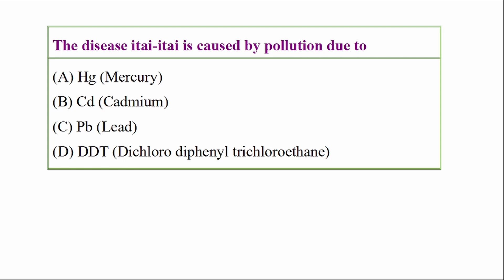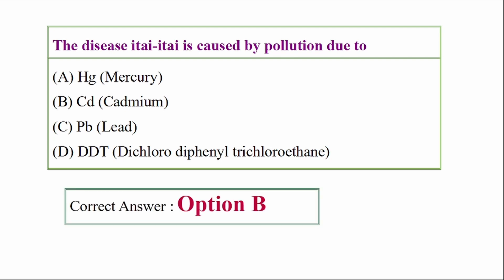The disease itai-itai is caused by pollution due to which element? Options: Hg (mercury), Cd (cadmium), Pb (lead), DDT (dichloro-diphenyl trichloroethane). Answer option B: cadmium, Cd. The disease itai-itai is caused by pollution due to cadmium.